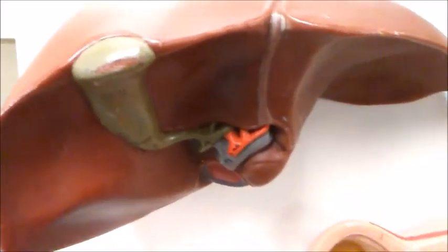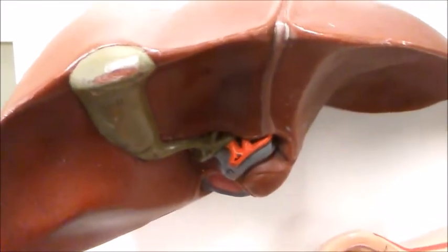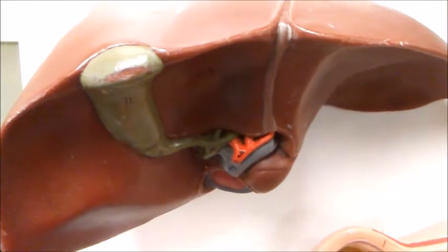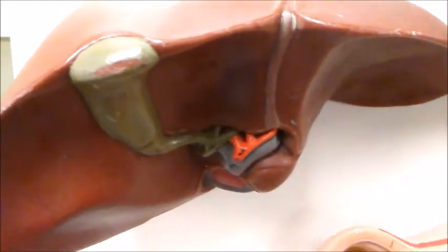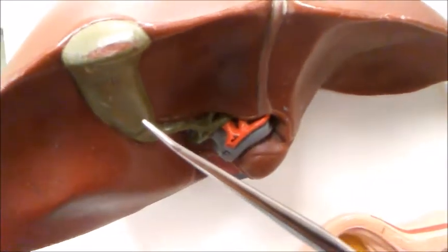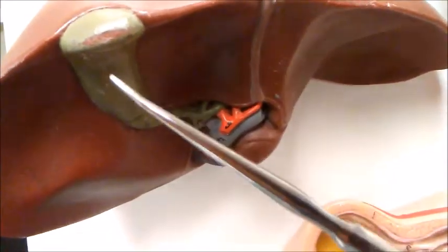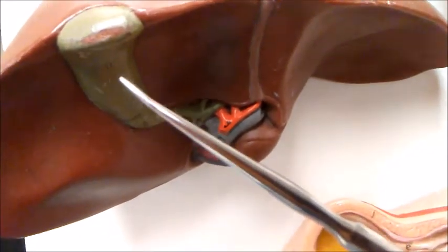The liver is an important organ because it has many functions. One of those functions is obvious on the model - we see the gallbladder, and the gallbladder stores bile.